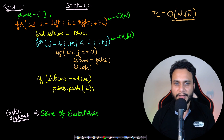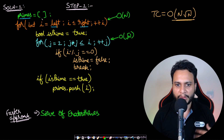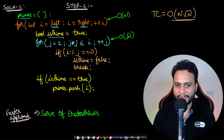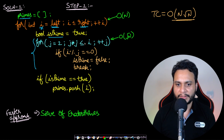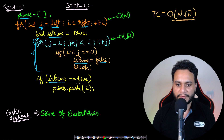For Step 1, the easiest method is: take a primes list, iterate from left to right, and use a boolean flag 'is_prime' assuming the current value is prime. Then do the square root of N check — start from 2 and go up to the square root of i, checking if there is any factor. If we find a factor, set is_prime to false and break. If the flag remains true after the loop, it is prime, so push it into the primes list.